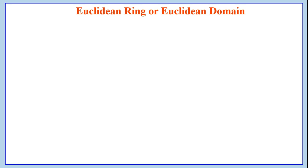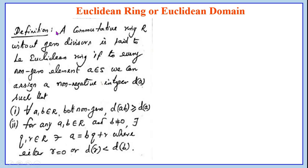A Euclidean ring or Euclidean domain is a commutative ring without zero divisors. It is said to be a Euclidean ring if to every non-zero element A belonging to R we can assign a non-negative integer D(A) such that the first condition is: for all A, B belonging to R, both non-zero, D(AB) is greater than or equal to D(A).